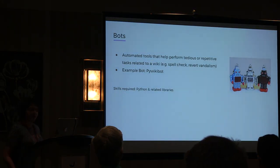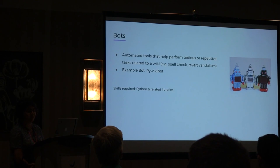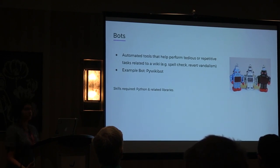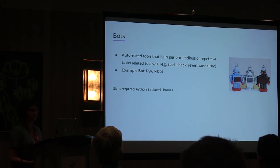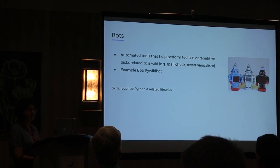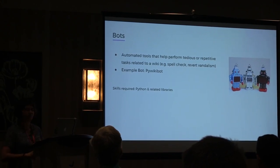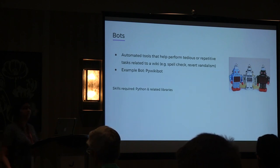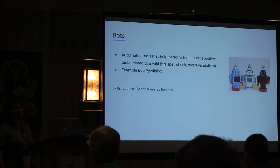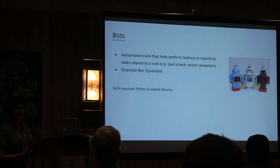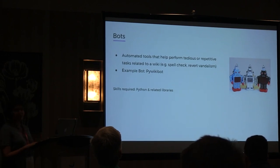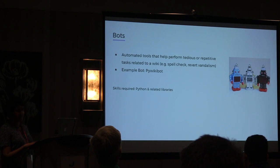Then we have bots, which are automated tools that help perform operations that are repetitive or otherwise burdensome. They help fix spelling mistakes, grammatical errors, avoid vandalism, or upload images from somewhere to Commons. An example of a bot is 580 bot, which is very relevant in the Wikimedia context. For bots, you will need the Python programming language.